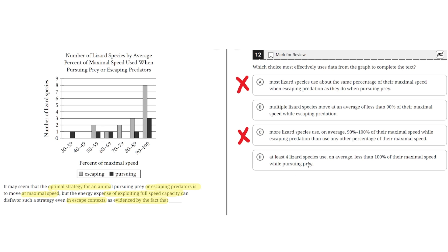Option D: At least four lizard species use, on average, less than 100% of their maximal speed while pursuing prey. This is incorrect because the claim in the text is that even in escape contexts, lizard species don't use 100% of their maximal speed — so the focus is on escape contexts, not pursuing prey. D is incorrect, and the correct answer is B.